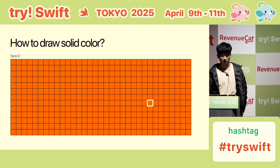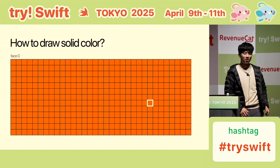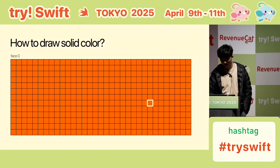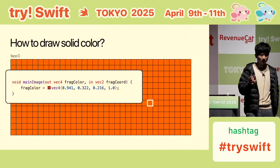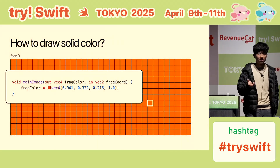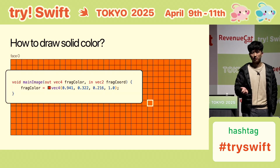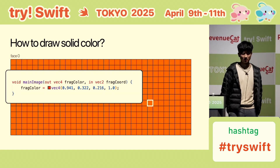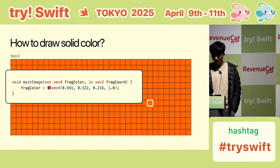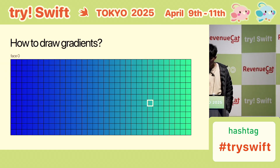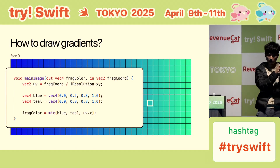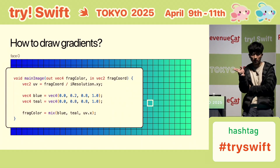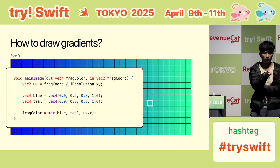Let's say you want to draw a solid color — very simple. Because the fragment shader is called for every single pixel, you just return a color for every pixel and the result is the whole thing is orange — this is a Swift orange color. For a gradient, also pretty simple: you just check the x coordinate, mix from 0 to 1, and it goes from blue all the way to teal.